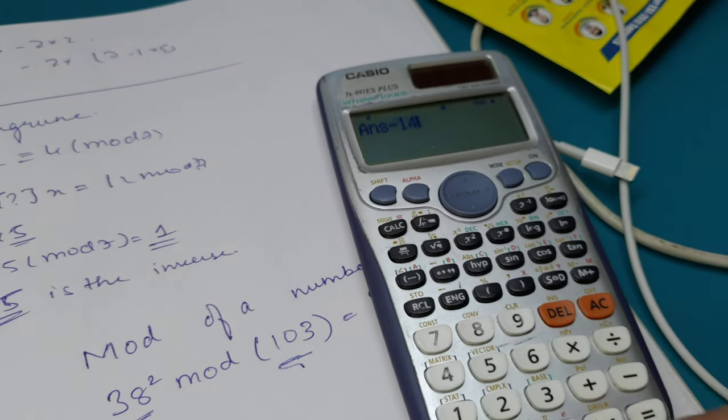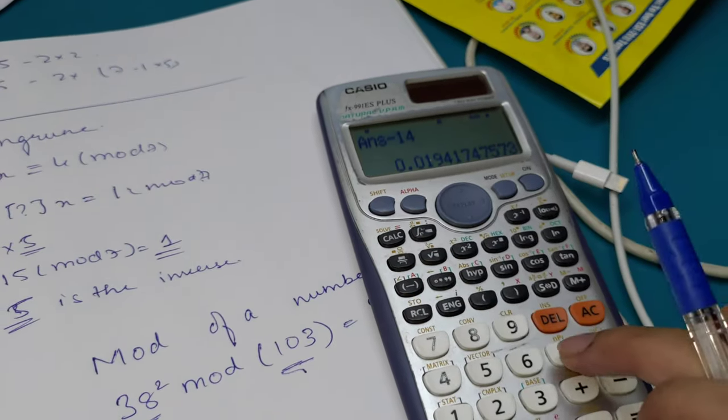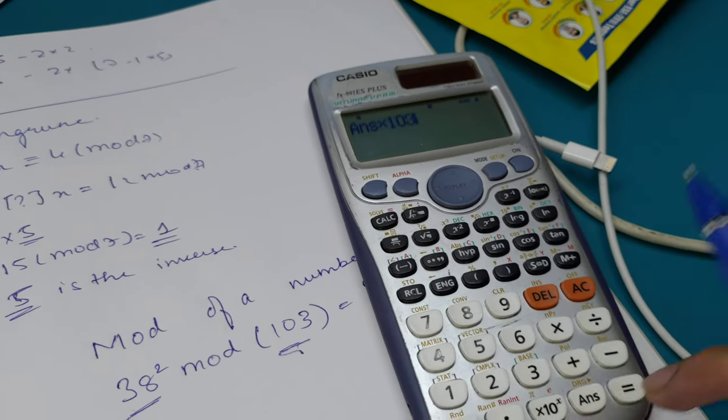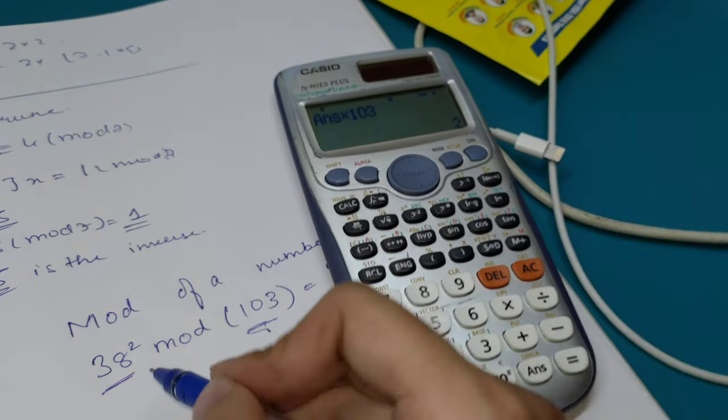So we subtract: minus 14, multiplied by whatever mod value we have, 103. We get 2.